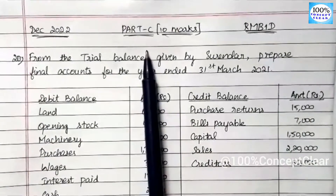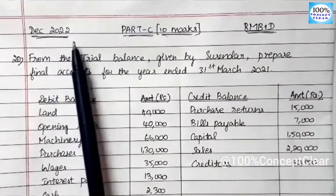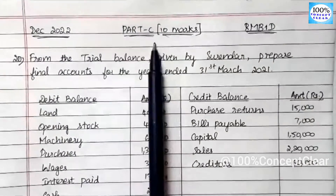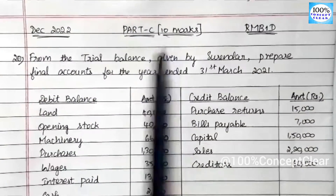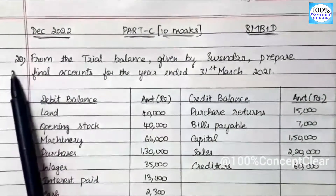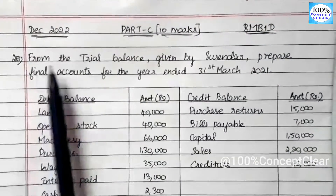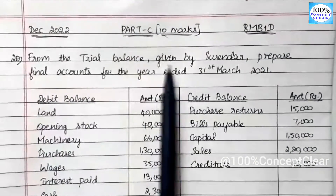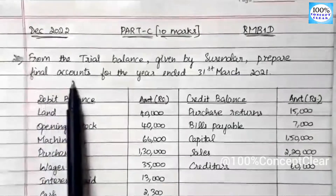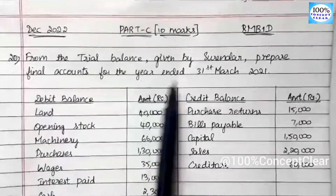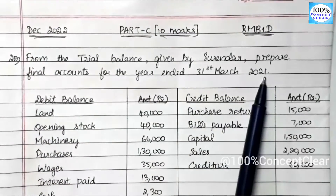We are going to study this subject in the December 2022 question papers. We are going to study Part C, that is 10 marks. We are going to study the 20th question: from the trial balance given by Surendar, prepare final accounts for the year ended 31st March 2021.